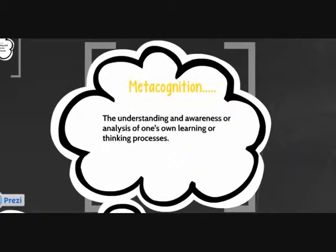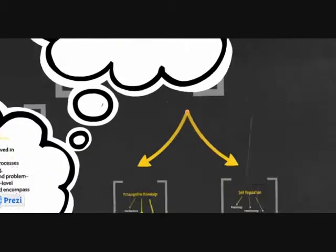Metacognition is thinking about thinking, being aware of the processes going on in your head so you can maximize your learning and understand how you are making meaning of things. There are two levels of activity happening with metacognition.